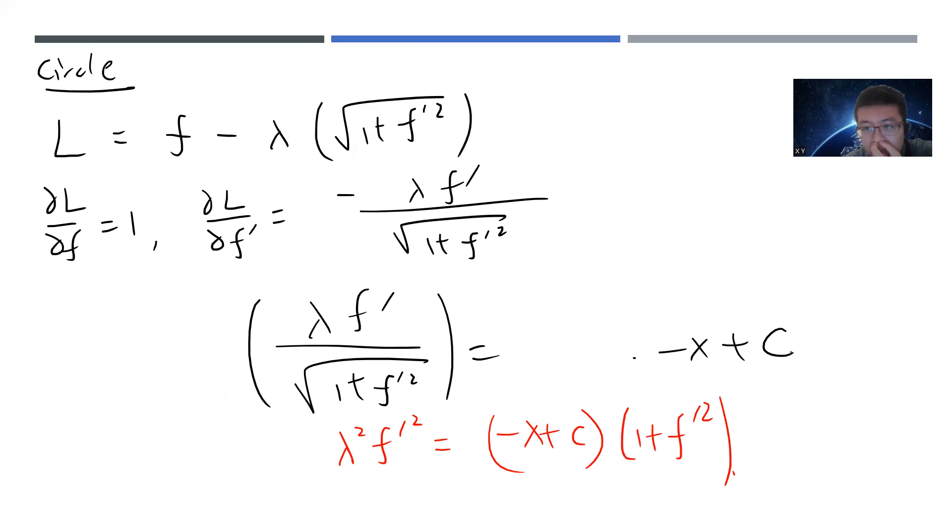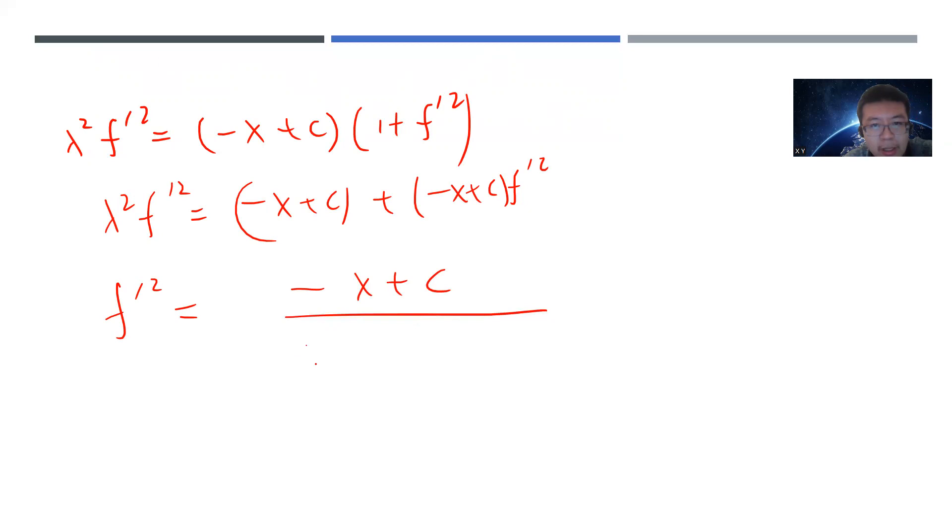Okay. So after that, you can write, you can directly square it. Okay. Now we can solve, we want to solve this F prime. Okay. So let's see this. So we have lambda F, lambda square F prime square minus X plus C one plus F prime of square. And we can just solve this.